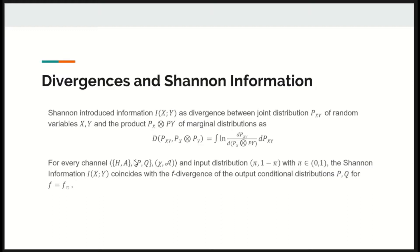Now, let's consider the theorem. For every channel with binary inputs, hypothesis and alternative, and with output conditional distributions P and Q over the measurable space chi, A and input distribution with pi and 1-pi as probabilities,